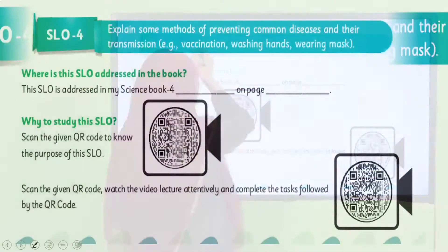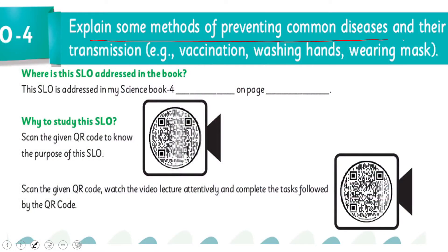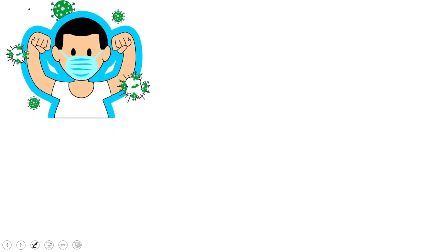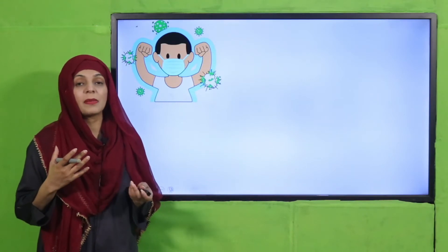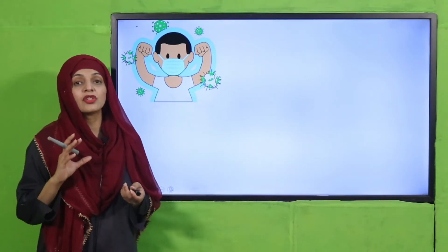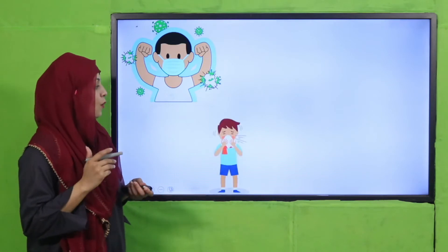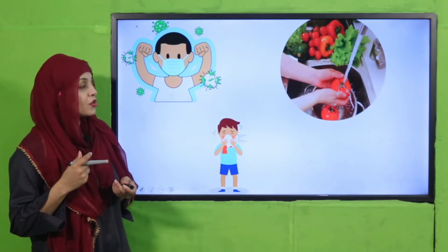According to this SLO, students will be able to explain some methods of preventing common diseases and their transmission — like vaccination, washing hands, wearing masks, etc. This SLO builds on recognizing common, contagious, and non-contagious diseases. Now children will know which precautions to take — such as washing, cleaning, covering their mouth, and vaccination.